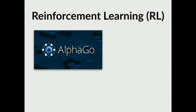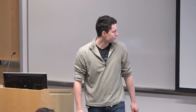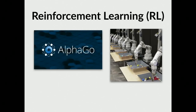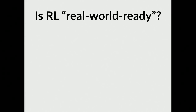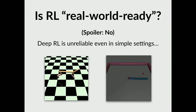We've all heard quite a lot about reinforcement learning. Probably the most well-publicized example recently has been AlphaGo, in which Google made a reinforcement learning algorithm to play the game of Go. There are also applications in robotics as well as self-driving cars. But all these applications beg the question of whether reinforcement learning is really ready for prime time. The answer is no — deep reinforcement learning is pretty unreliable even in very simple settings.